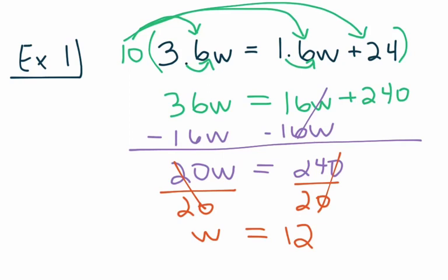So first example, we started off the problem by multiplying the entire equation by 10, and again, the reason that we did that is because our decimal places ended at the tenths place. Let's take a look at another one.